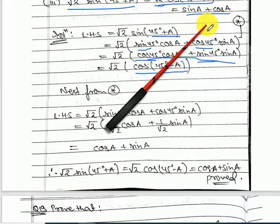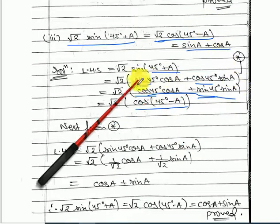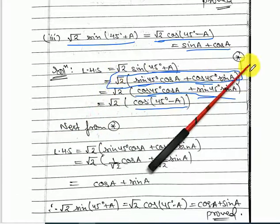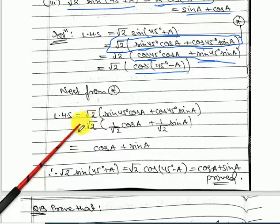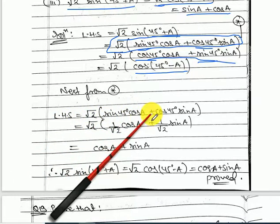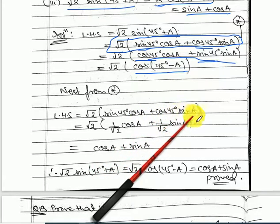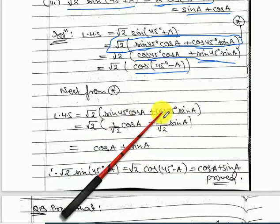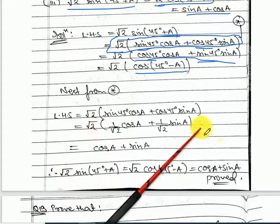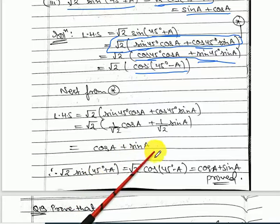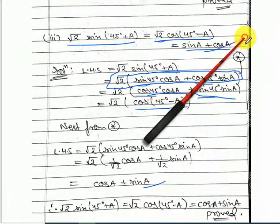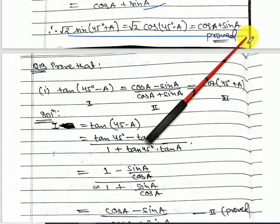To prove the second part, start from equation (star): root 2 times (sin 45 times cos A plus cos 45 times sin A). sin 45 and cos 45 are both 1 by root 2, and root 2 is outside. Multiplying through gives cos A plus sin A. So left hand side equals sin A plus cos A, which is proved.